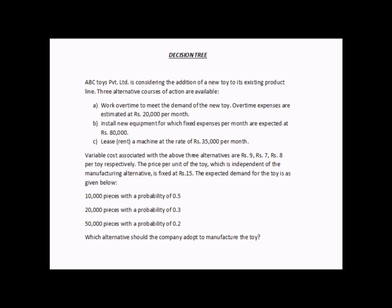The price per unit of the toy, which is independent of the manufacturing alternative, is fixed at rupees 15. The sale price of the toy, irrespective of which manufacturing option they choose, is rupees 15. The expected demand for the toy: 10,000 pieces with probability 0.5, 20,000 pieces with probability 0.3, and 50,000 pieces with probability 0.2.